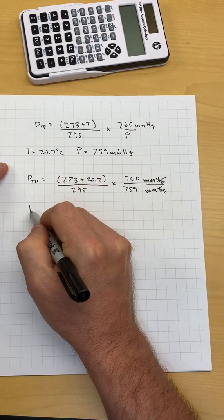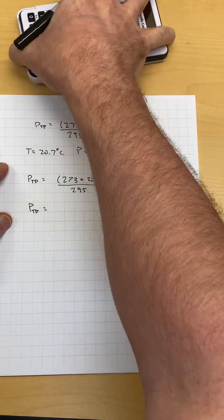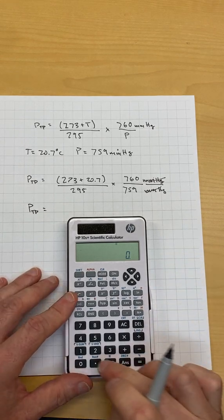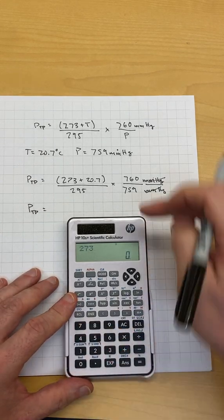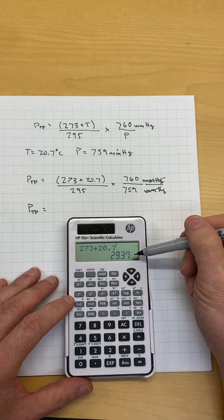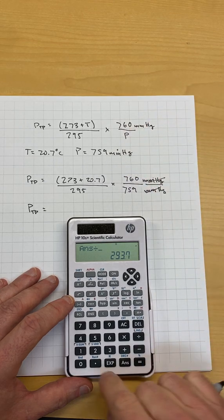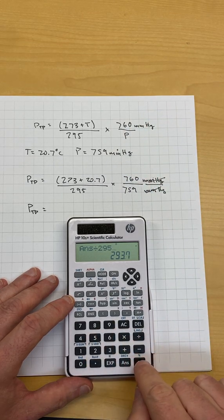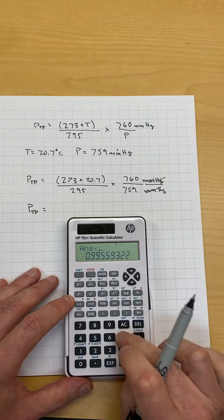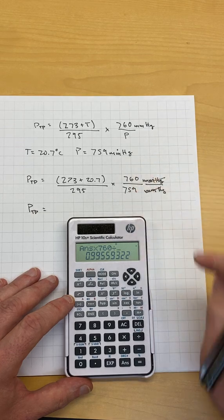273, the kelvins will cross out, and then I just have to get my calculator out. Let's do some calculator work here. 273 plus 20.7 equals 295.7 divided by 295 equals. Then I've got to do the pressure part. That's times 760 divided by 759.